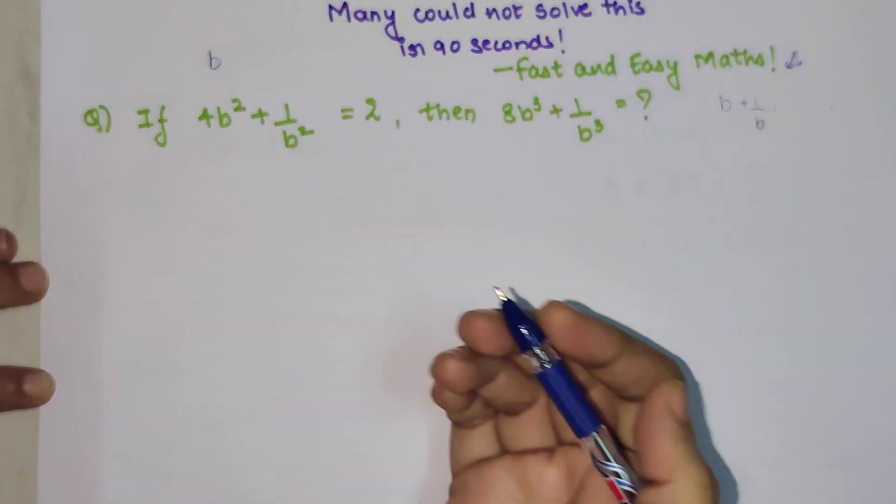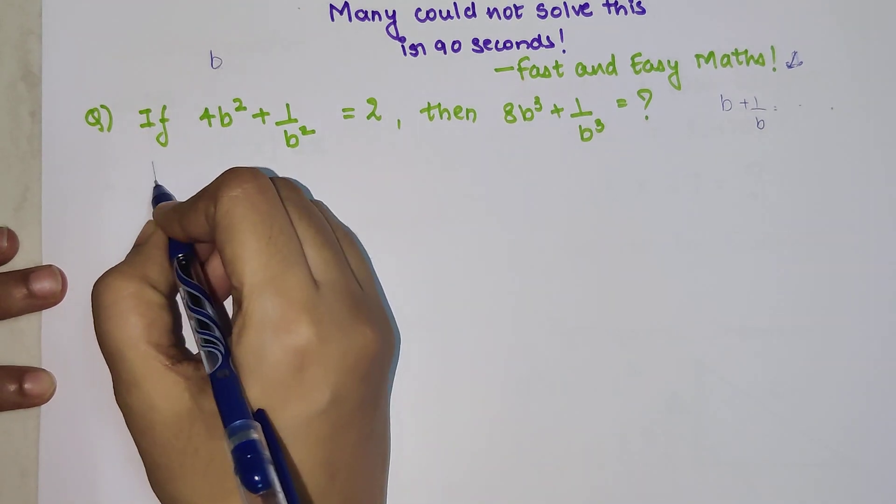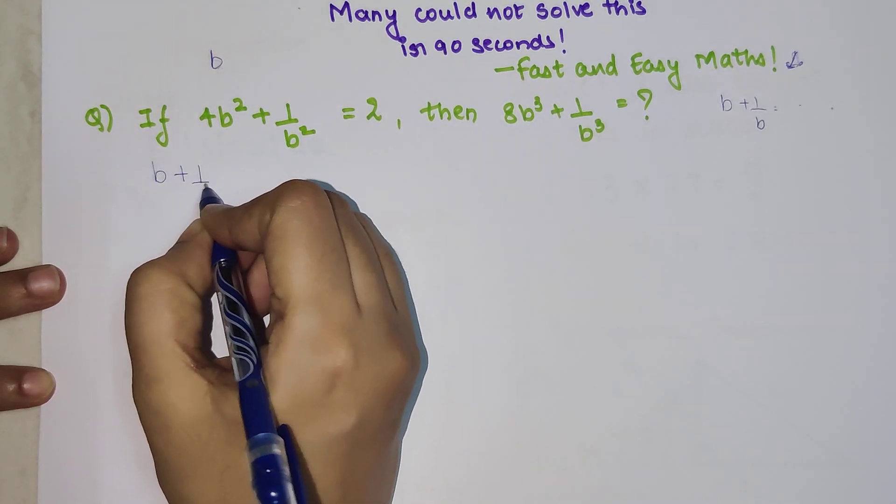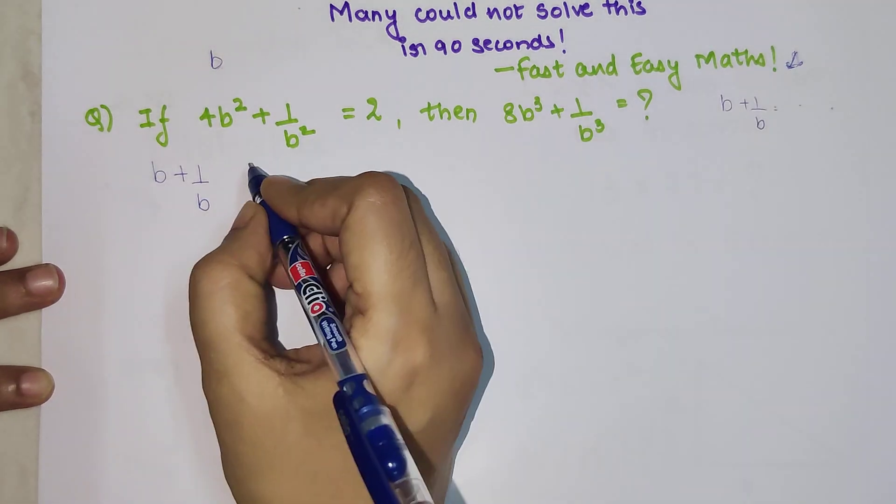We go back. We will try to figure out if we can find something called as something in terms of b + 1/b. Now how will we do that, let's see.